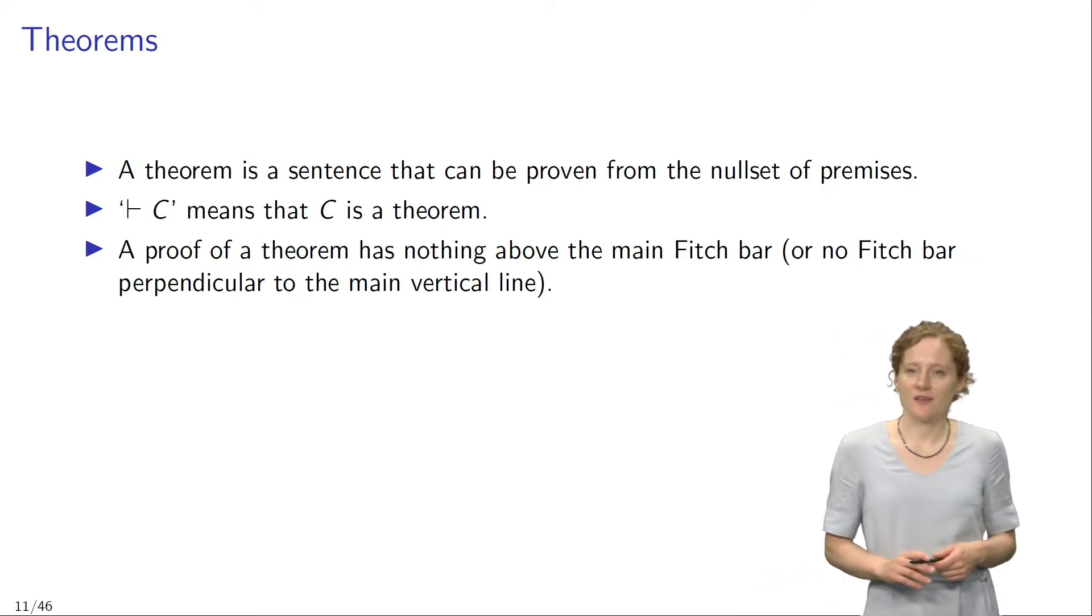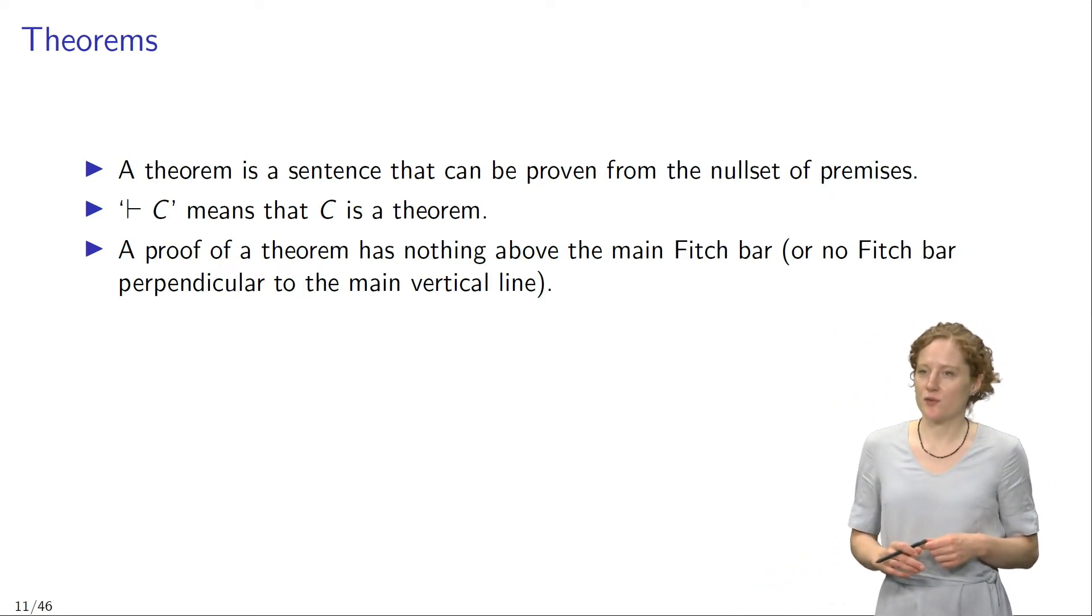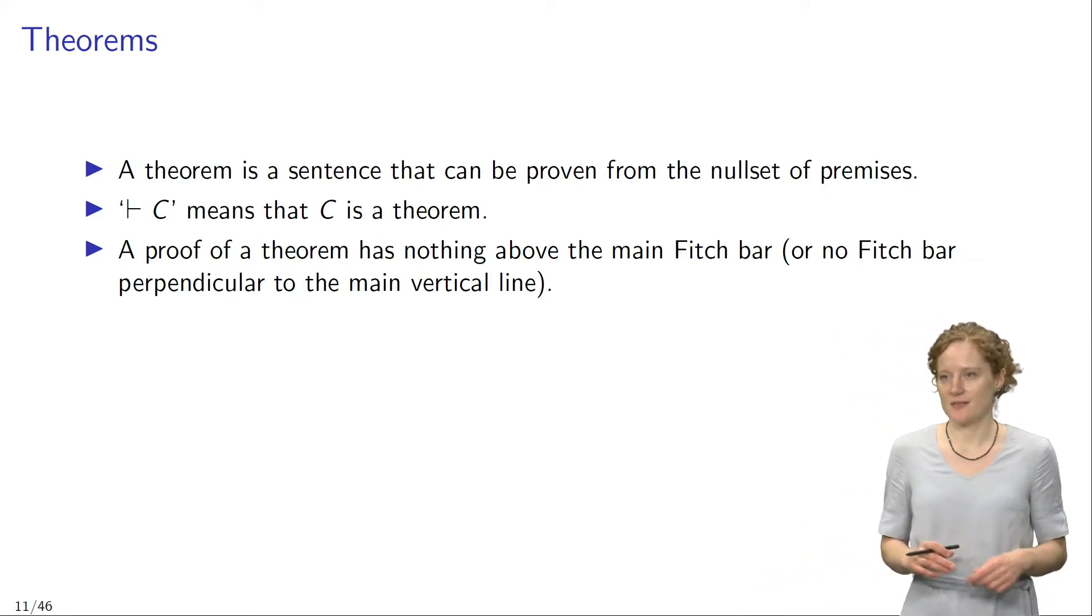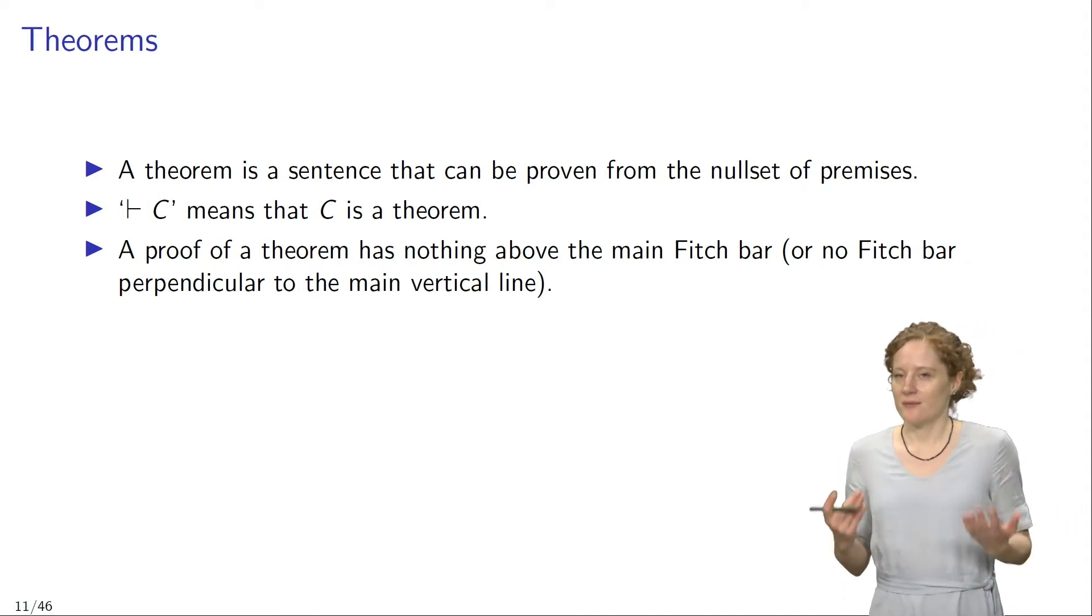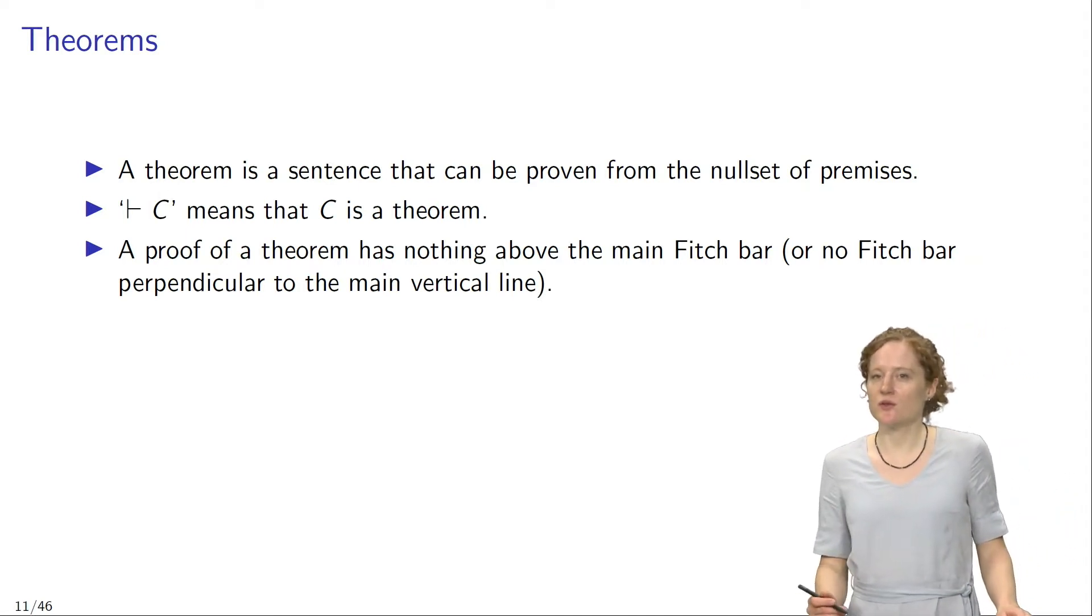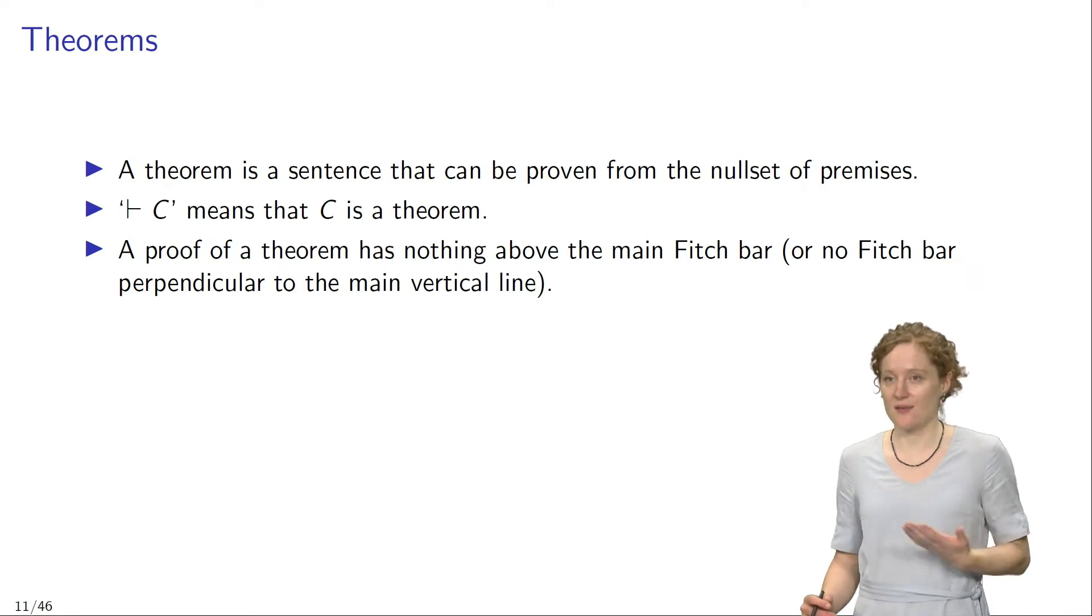A theorem is a sentence that can be proven from the null set of premises and we can express this property using the turnstile. When I say turnstile C, that means that C is a theorem. You can see that here to the left of the turnstile there's nothing, no further sentences to the left of the turnstile. So what I'm saying is that C can be proven from no premises whatsoever and that's just what it means to be a theorem.